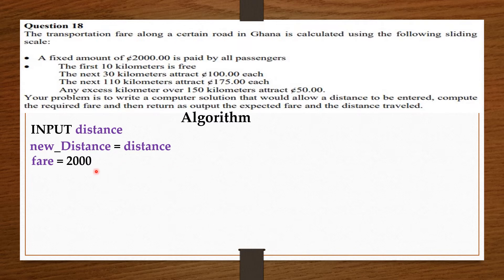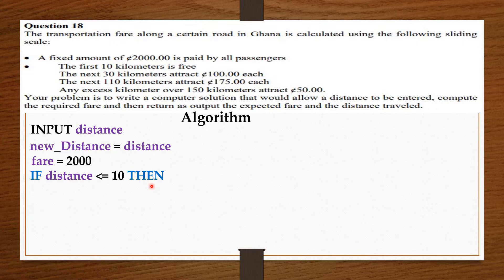The first 10 kilometers is free, meaning if you are traveling within 10 kilometers you are only going to pay for the fixed amount and nothing else. So we say: if distance is less than or equal to 10, then the fare is equal to 2000.